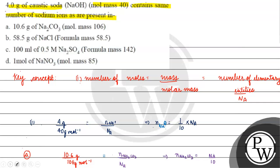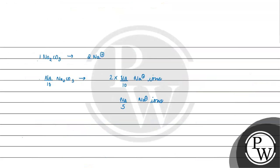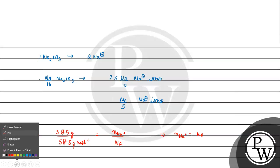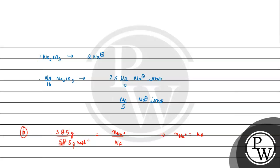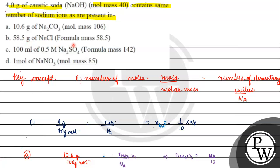Option B: 58.5 grams of NaCl, molar mass 58.5 grams per mole. So moles = 58.5/58.5 = 1 mole. NaCl gives 1 Na⁺ per formula unit, so the number of sodium ions equals 1 × Avogadro's number = N_A. This does not equal N_A/10, so let's check Option D.